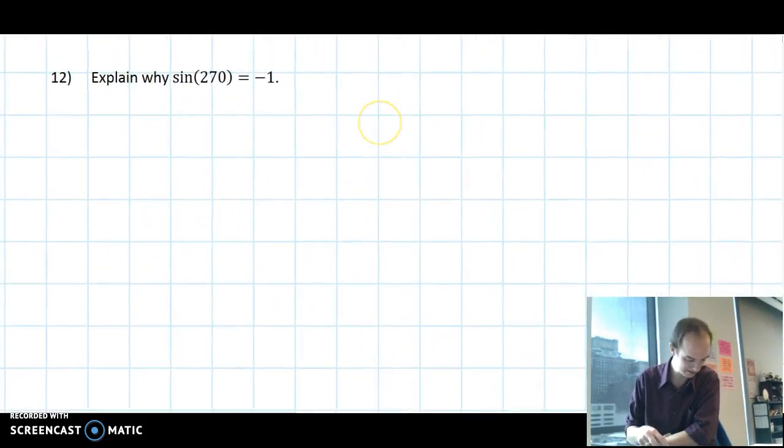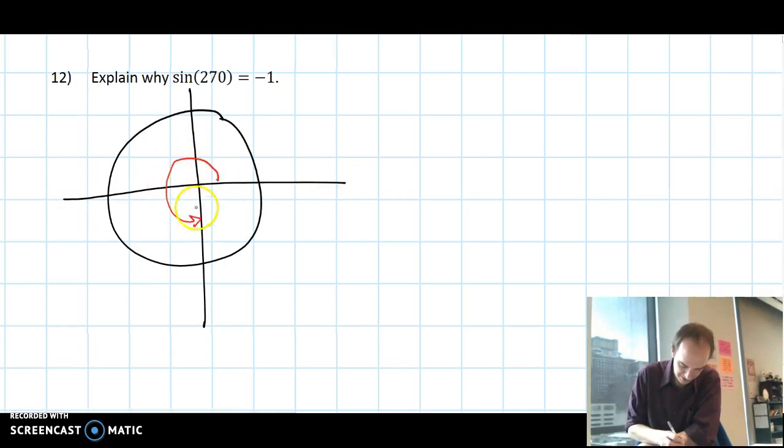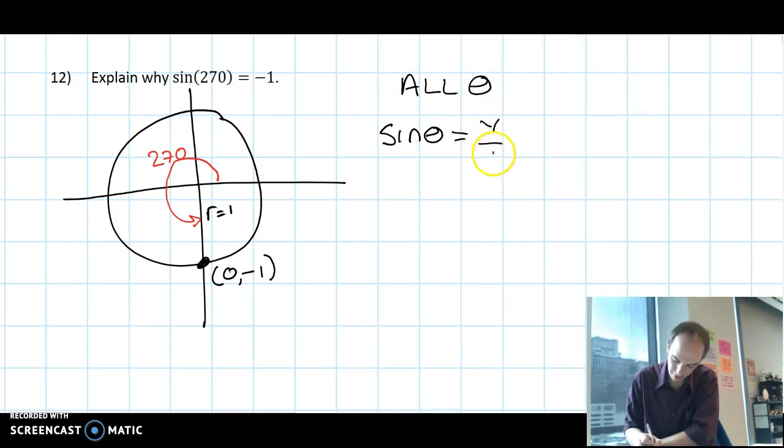Number 12, explain why the sine of 270 is negative 1. So I would draw a unit circle again, and draw 270 like this. So on this circle, if the radius is 1, then this point is 0, negative 1. So sine of theta, for all theta, is going to be y over 1, because of this picture. Hypotenuse of 1, if this point is x, y, then the opposite is y, and the adjacent is x. So this picture leads to this formula, and in this point, this is x, this is y, so sine of 270 is negative 1 over 1, or just negative 1.